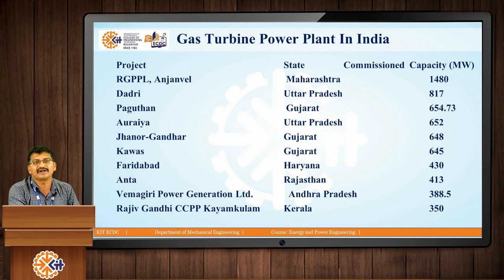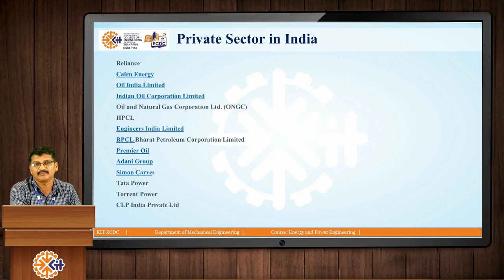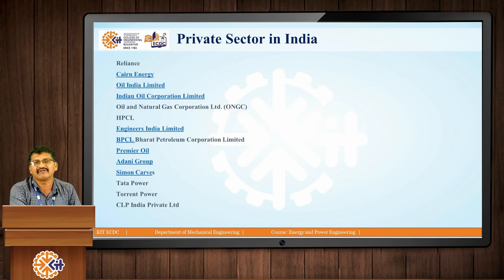It is from thermal power plants — coal-based thermal power plants. In the private sector, companies include Caynes Energy, Reliance, Oil India Limited, Indian Oil Corporation Limited, ONGC — which recently discovered oil and gas reserves in the Odisha basin offshore. Other companies include HPCL, Engineers India Limited, BPCL, Premier Oil, Adani Group, Simmons Carvers, Tata Power, Torrent Power, and CLP India Private Limited. ONGC is a government agency; the others are private companies.